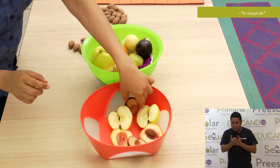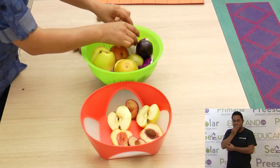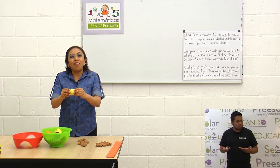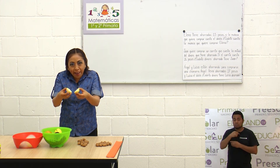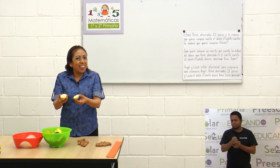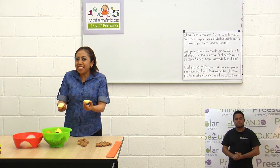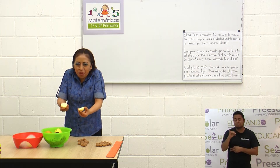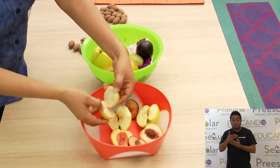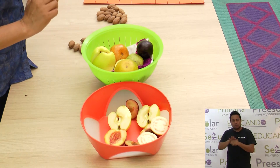Entonces tenemos mitades de manzanas, mitades de duraznos y mitades de ciruela. También traje, para mostrarte, una guayaba. La guayaba también la cortamos en dos partes iguales. ¿Cómo se llama cada pedazo? Claro, son mitades — es una mitad y es otra mitad. ¿Tan fácil es eso? Pues sí, es súper fácil, y todos los días lo vemos en nuestra mesa.